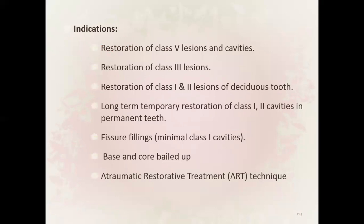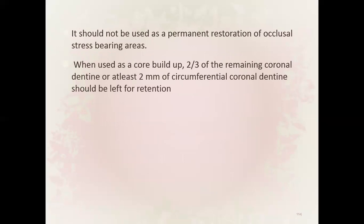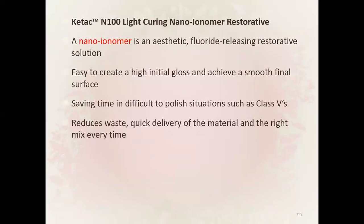Indications for Chem Flex: restorations of class five lesions, class one and two lesions of deciduous teeth, long-term temporary restorations for class one and two cavities in permanent teeth, fissure sealings, base and core buildup, and ART technique. It should not be used as a permanent restoration in occlusal stress-bearing areas. When used as core buildup, two-thirds of the remaining coronal dentine or at least 2 mm of circumferential coronal dentine should be left for retention.